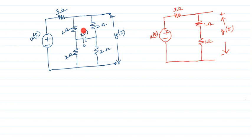Now observe this circuit closely. The current flowing through this is i. The current flowing through this arm is i/2, and this is also i/2 — equally divided. The reason is, though the capacitor is physically present, it is technically absent because it's a balanced bridge circuit.